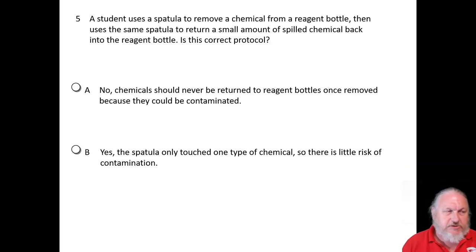So a student uses a spatula to remove a chemical from a reagent bottle, then uses the same spatula to return a small amount of spilled chemical back into the bottle. Is this correct protocol? No, chemicals should never be returned to the reagent bottles once removed because they could be contaminated, or yes, the spatula only touched one type of chemical so there is little risk of contamination? Well the answer is no, you should not because that stuff is contaminated.